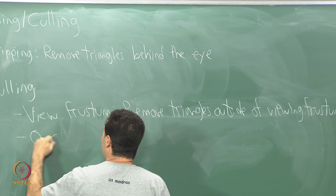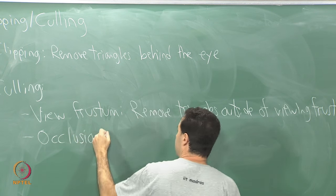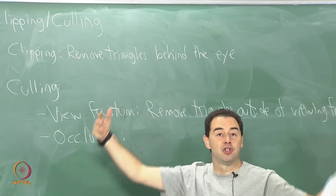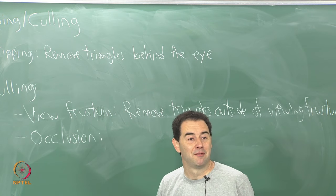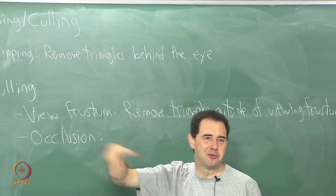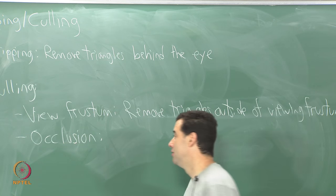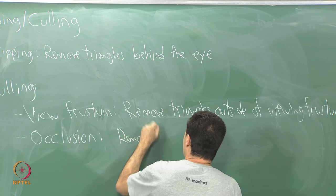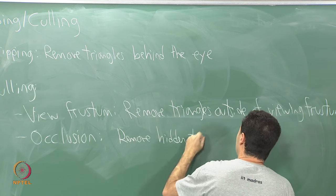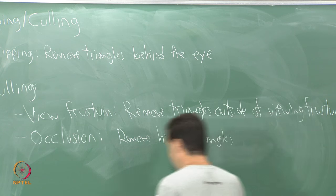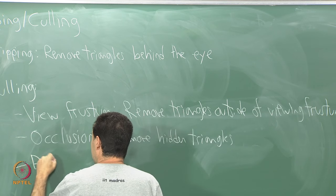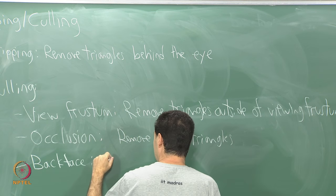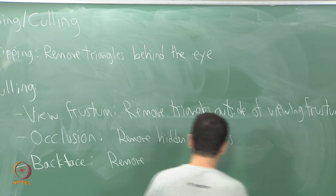There is also occlusion culling, which could be quite complex. This is where you know that a bunch of triangles are behind some large object, so you can remove them. Of course, you have to do very complicated visibility analysis and reasoning to accomplish that — it might be too complex to do the calculations. Nevertheless, in many settings it is worth considering. Remove what are called hidden surfaces.